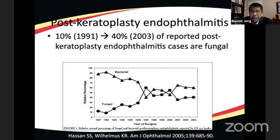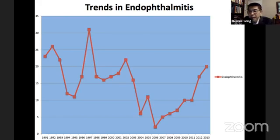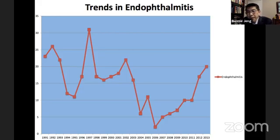Looking at the total number of endophthalmitis cases, from 1991 the general trend through 2006 was downward, then in 2006 it started to go up. What happened around 1991? That coincided with the introduction of Optisol GS, which contains broad-spectrum antibiotics, coupled with better ways of sanitizing corneas before storage — all contributing to lower infection rates. Cases kept going down until 2006 — keep that date in mind — and then started to rise.